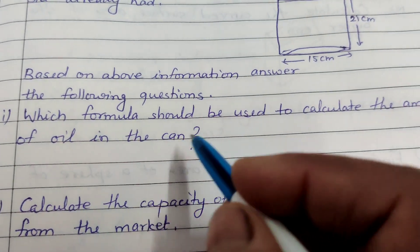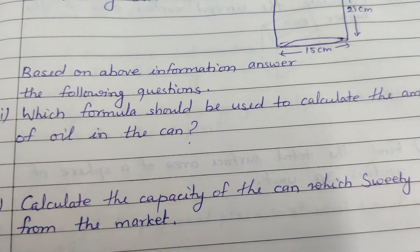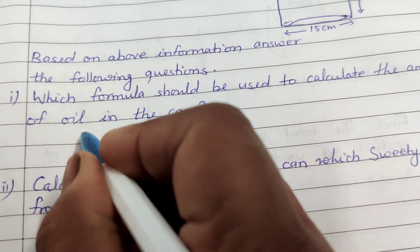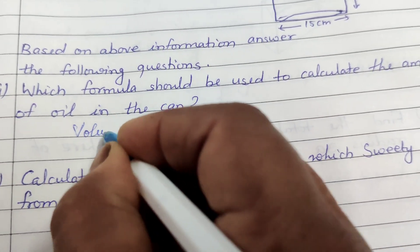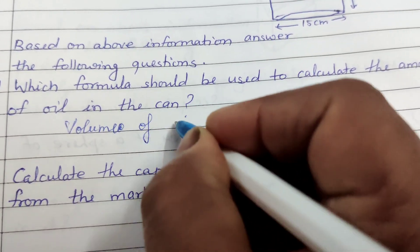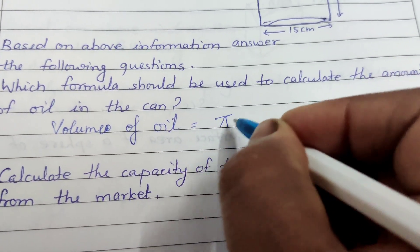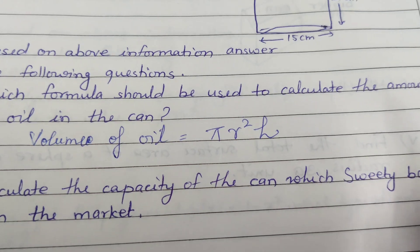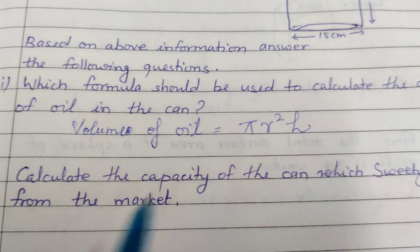Now based on the above information answer the following questions. The first question is which formula should be used to calculate the amount of oil in the can? The amount of oil in the can means the volume of oil. Volume of oil, this ko nikalne ke liye kya formula use hoga? Pi r square h. This is the formula of volume, pi r square h.